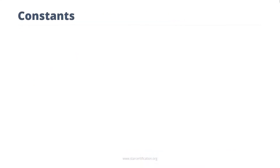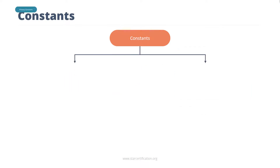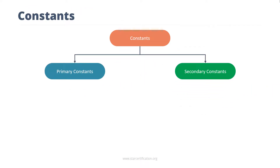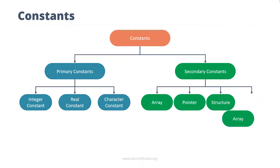A variable is a quantity that changes during program execution. Unlike variables, a constant is a quantity that does not change throughout the program execution. There are two types of constants: primary constants and secondary constants. The flowchart on the screen describes the classification of primary and secondary constants. You need to follow similar rules as variables for naming, declaring and assigning a value to constants.